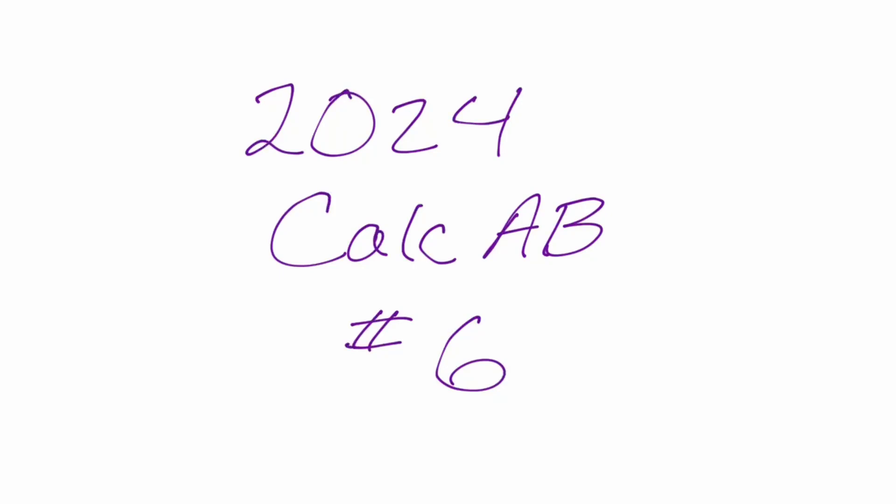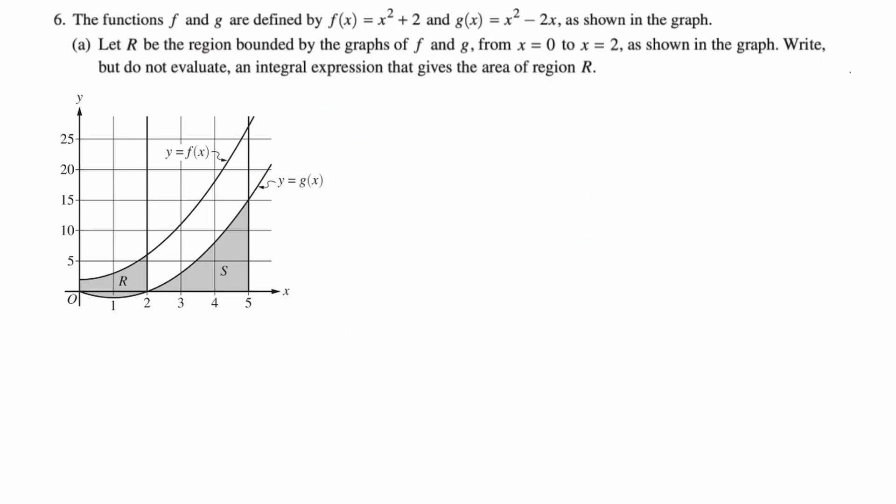Okay, in this video we're doing number six from the 2024 Calc AB exam. Let's take a look. The functions f and g are defined by f(x) = x² + 2 and g(x) = x² - 2x as shown in the graph.